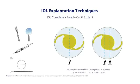This is another technique which is perhaps more commonly used and technically simpler. You completely free up the lens and then cut the lens either into half — as seen in the left diagram — or into three pieces as shown on the right, and then you explant it.